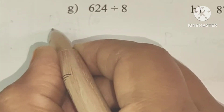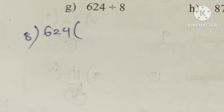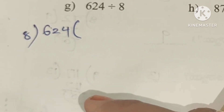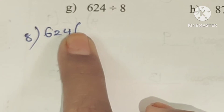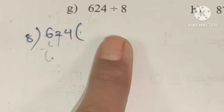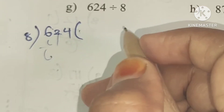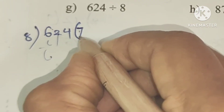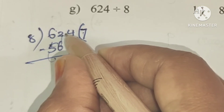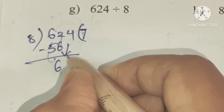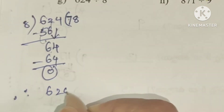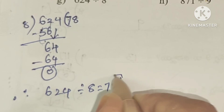G: 624 divided by 8. First number 6 is smaller than 8, so we take two digits: 62. 8 sevens are 56 — closest to 62. After subtraction: 62 minus 56 equals 6. Next number 4 comes down making 64: 8 eights are 64, after subtraction remainder 0. So 624 divided by 8 equals 78.